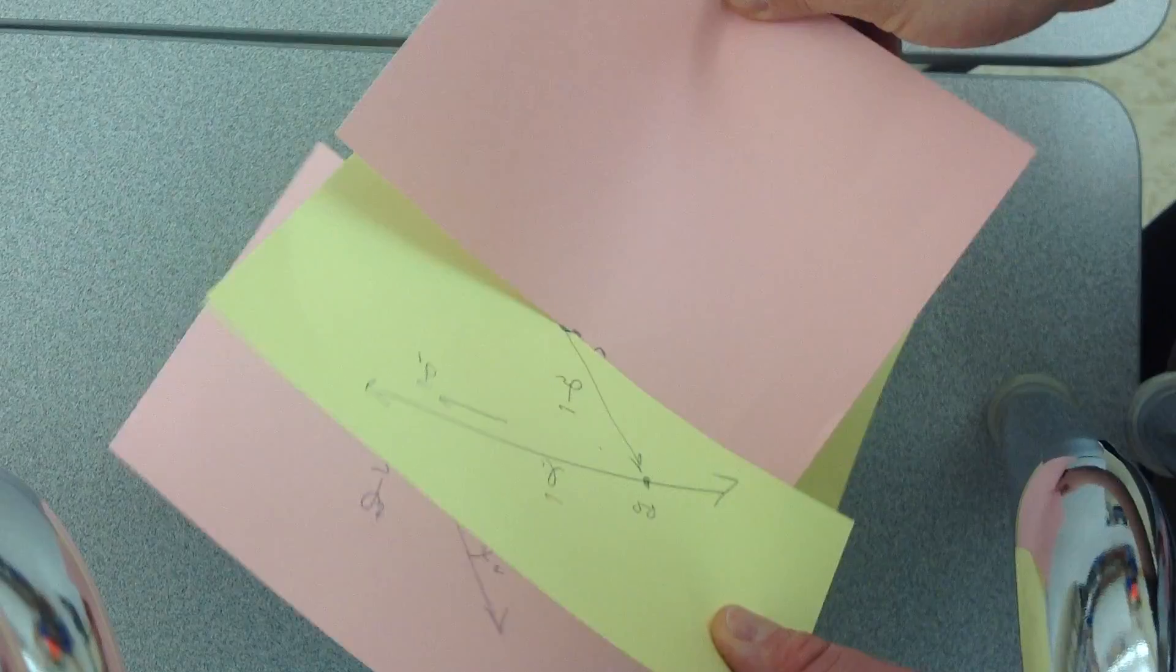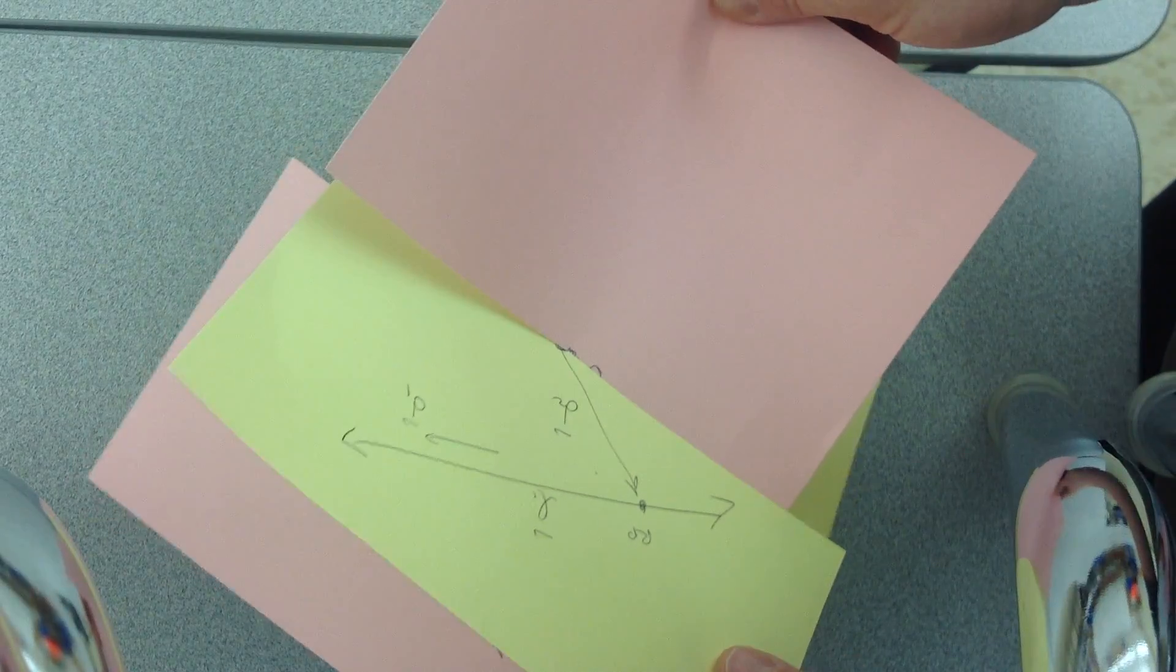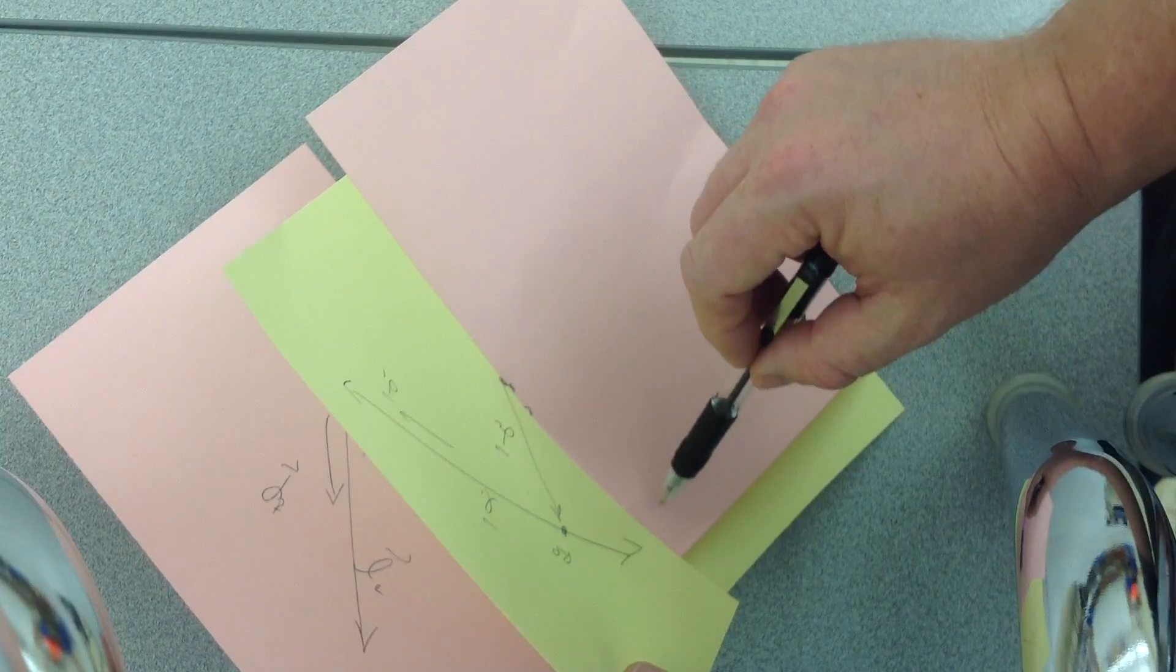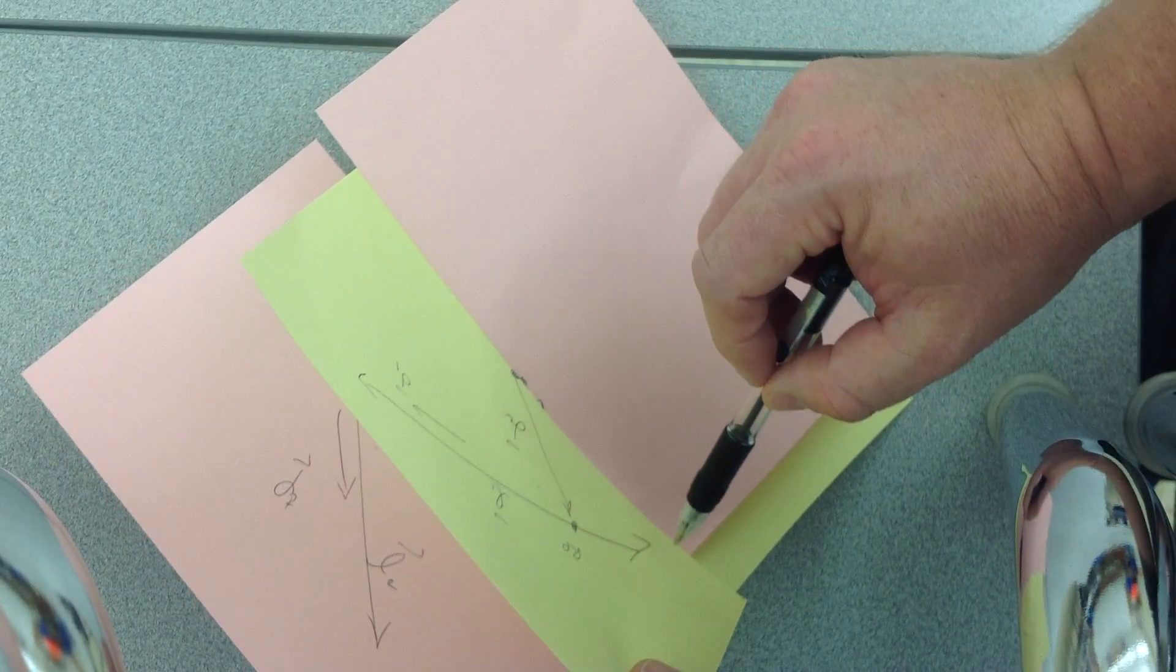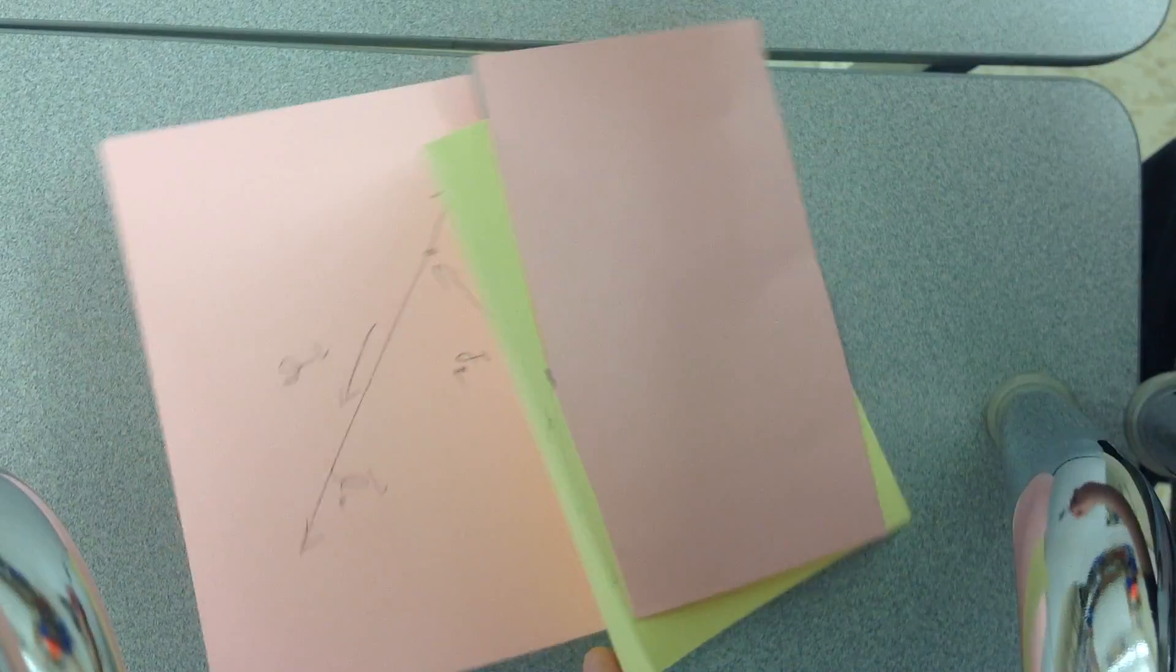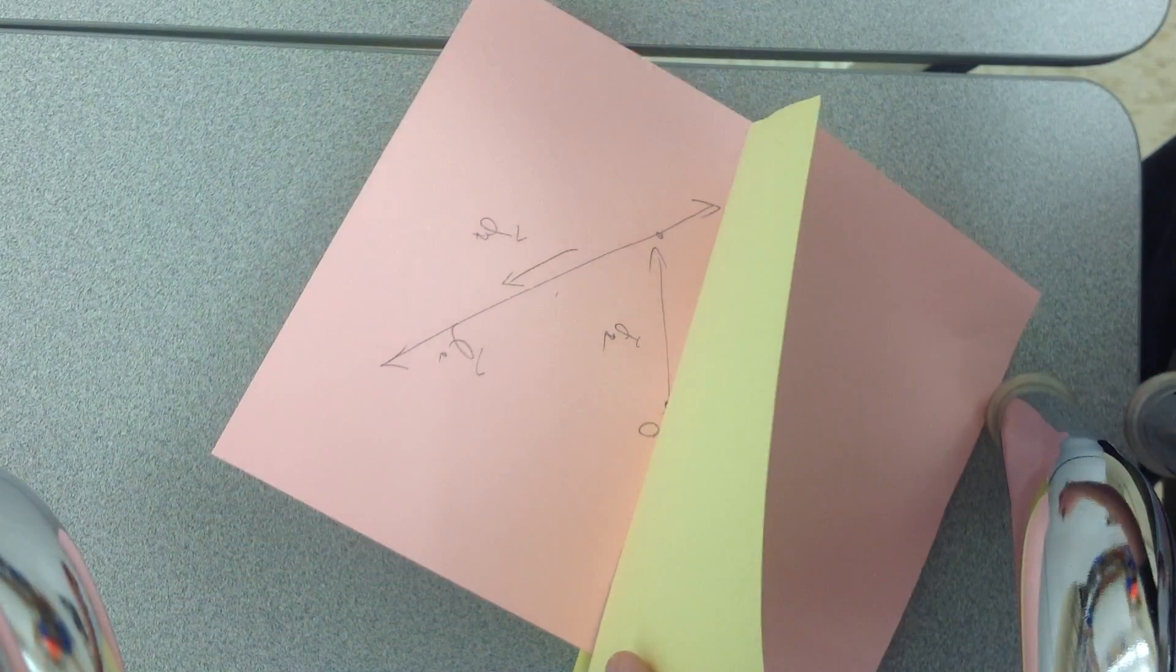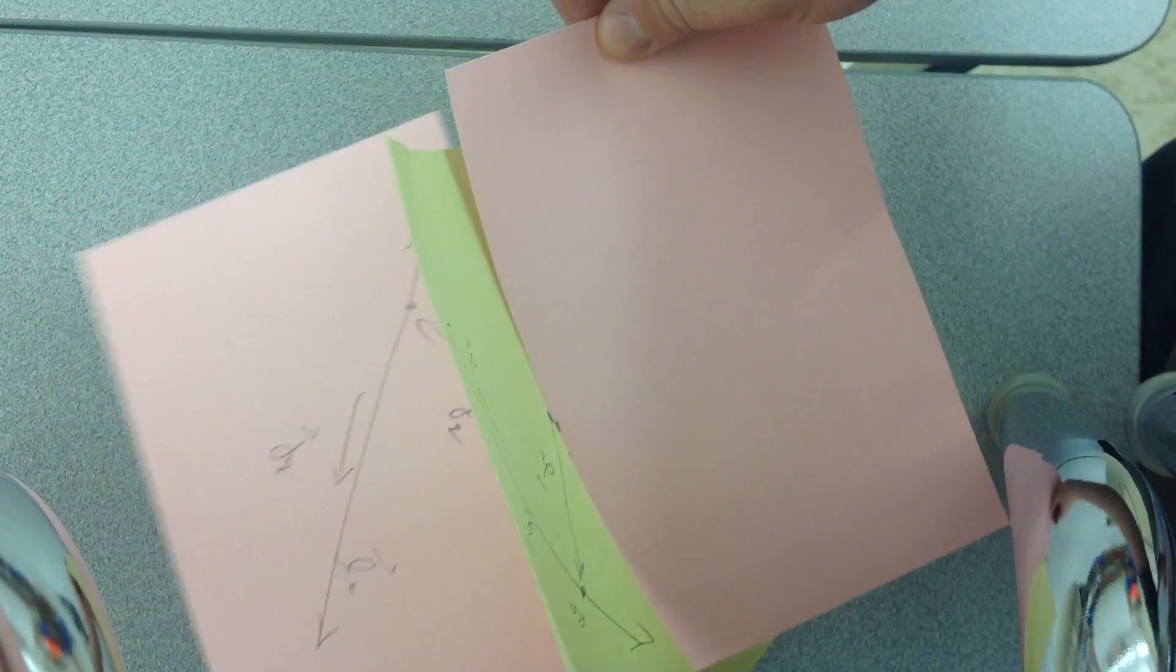And what happens is that origin then creates a line from this point where the line from the yellow plane crosses the piece of paper through the origin, through the other location, where the other line crosses the yellow piece of paper.